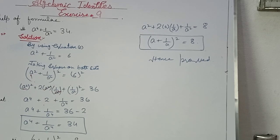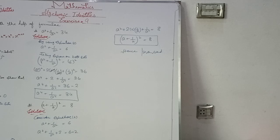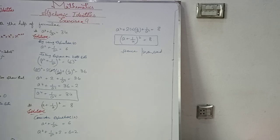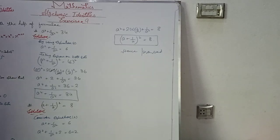Then comes the third part: (a + 1/a)² = 8. We consider equation 2, which is a² + 1/a² = 6. We notice that if we look at the expression a² + 1/a², we can relate it to the square of (a + 1/a).